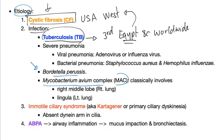Mycobacterium avium complex, or MAC, classically involves the right middle lobe and the left lingula, which is analogous to the left middle lobe — we call it the lingula because it's small, thanks to the heart occupying that space.